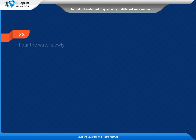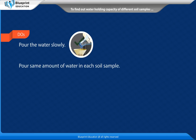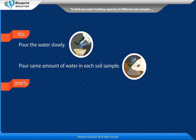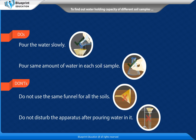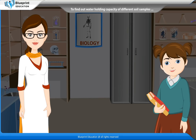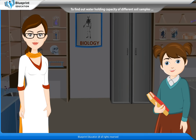Do: Pour the water slowly. Pour the same amount of water in each soil sample. Don't: Do not use the same funnel for all the soils. Do not disturb the apparatus after pouring water in it. Thank you, madam. This experiment has made the concept very easy to understand.